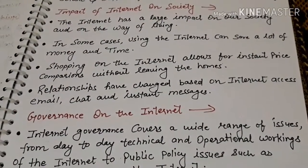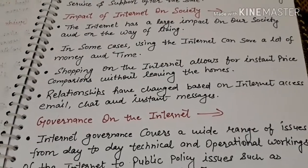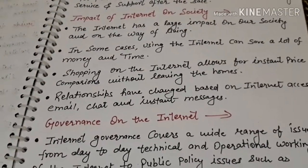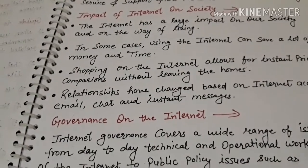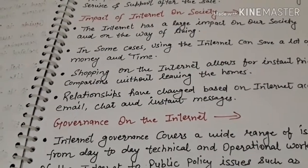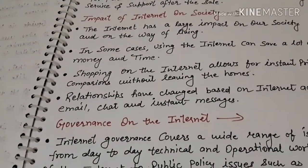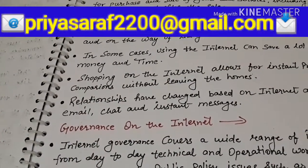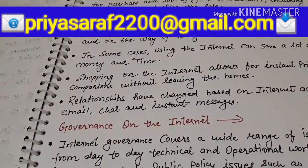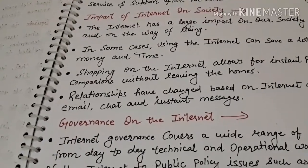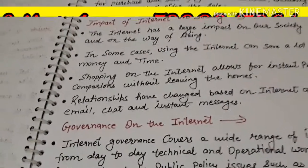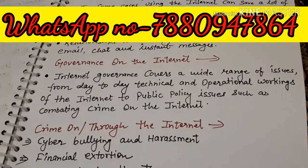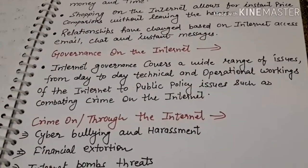The next point is that our relationships have changed based on the internet. Email and instant messaging — uses of email, WhatsApp, Facebook, Instagram. People can sit at home and chat. We can communicate through the internet with our society.